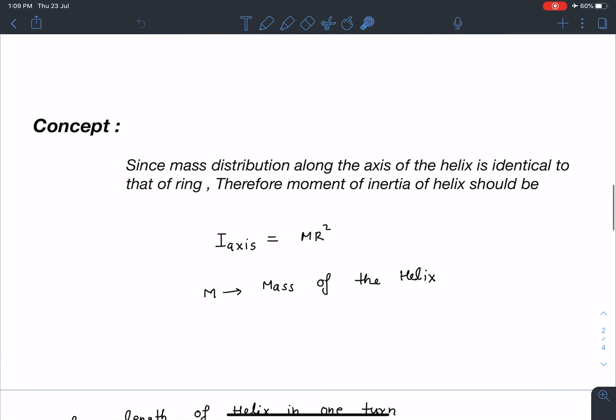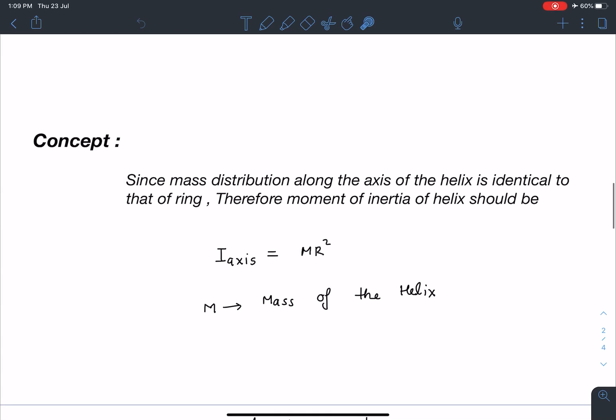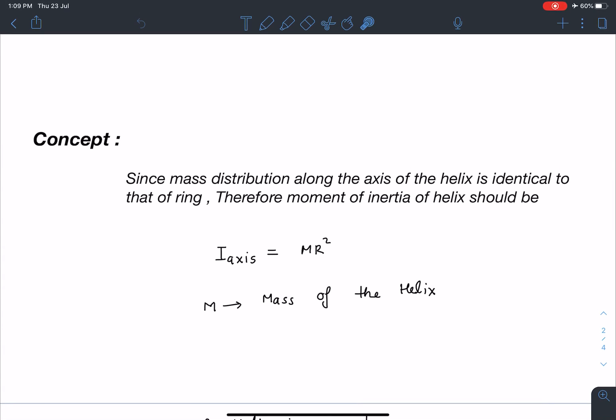So here is the concept involved. It's a very simple problem. Since mass distribution along the axis of the helix is identical to that of a ring, therefore, moment of inertia of helix should also be identical to the ring, which is I_axis equals MR squared.